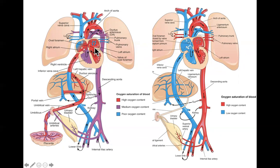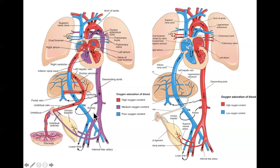In the fetus, the most oxygenated blood comes out of the placenta through the umbilical vein. This umbilical vein travels up, goes through the liver and the ductus venosus, into the inferior vena cava, straight into the right atrium, through the foramen ovale into the left atrium, and also down into the right ventricle. All this semi-oxygenated blood then flows out through the arteries into the rest of the body.